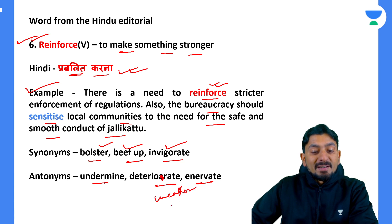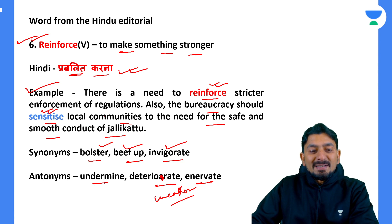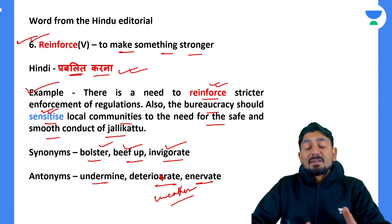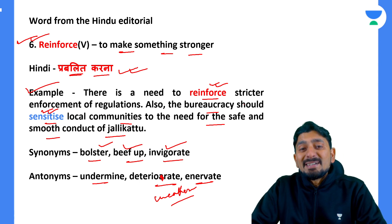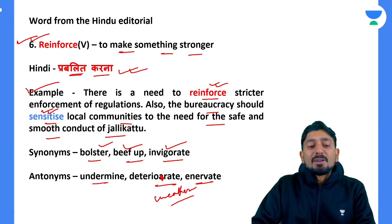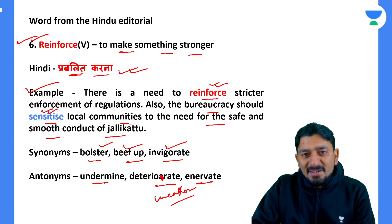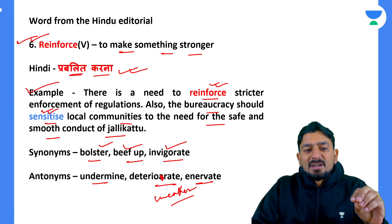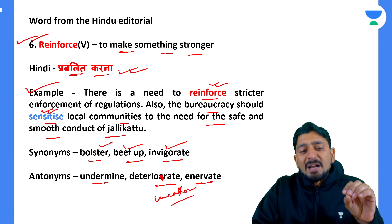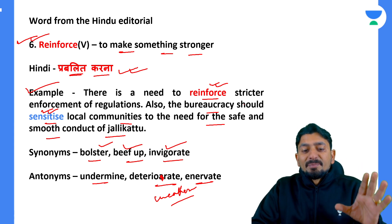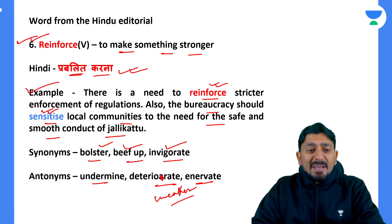Also from that sentence: 'The bureaucracy should sensitize local communities to the need for the safe and smooth conduct of Jallikattu.' Sensitize here means people should understand the sensitivity — they should be sensitive towards animals. So the authorities should ensure they sensitize local people so that Jallikattu is conducted safely and smoothly.